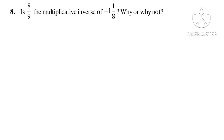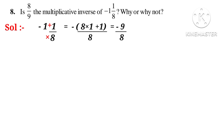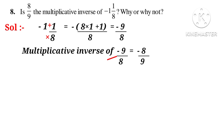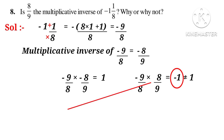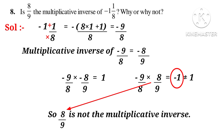Now the eighth problem: is 8 by 9 the multiplicative inverse of minus 1 and 1 by 8? Why or why not? Solution: convert minus 1 and 1 by 8 into an improper fraction: minus of (8 into 1 plus 1) by 8, that is minus 9 by 8. Multiplicative inverse of minus 9 by 8 is minus 8 by 9, because their product minus 9 by 8 into minus 8 by 9 equals 1. Whereas the product of minus 9 by 8 into 8 by 9 equals minus 1, which is not equal to 1. So 8 by 9 is not the multiplicative inverse.